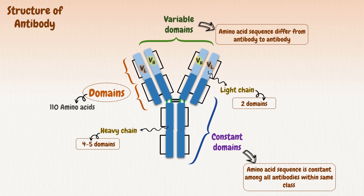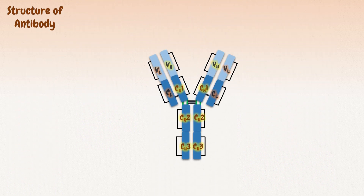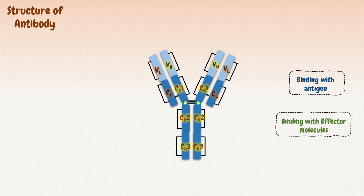The heavy chain constant domains are called CH1, CH2, and CH3, whereas the light chain constant domain is called CL. An antibody molecule has to perform dual tasks: first, binding to a wide variety of antigens, and second, binding to effector molecules to destroy the antigen.